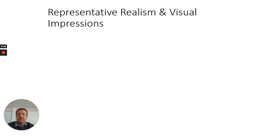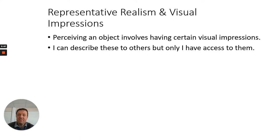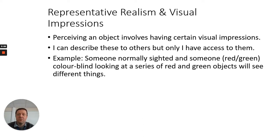Let's first look at representative realism and visual impressions. Perceiving an object obviously involves having certain visual impressions; otherwise we wouldn't be able to actually see the object at all. I can describe these to others, but only I have access to them. I can describe my experiences of colour, pain, or anything that comes through sound and hearing — I can describe these perceptions to others, but only I can know how they are for me. Other people obviously have experiences too, but I cannot know the quality of their experiences any more than they can know the quality of mine.